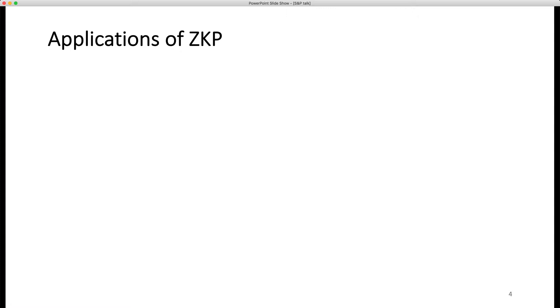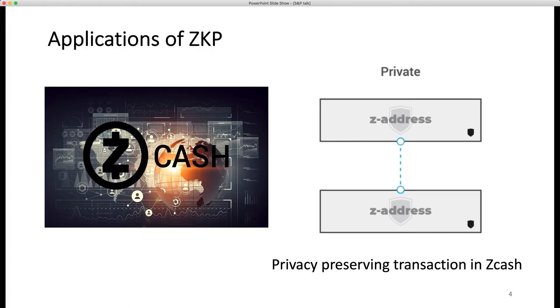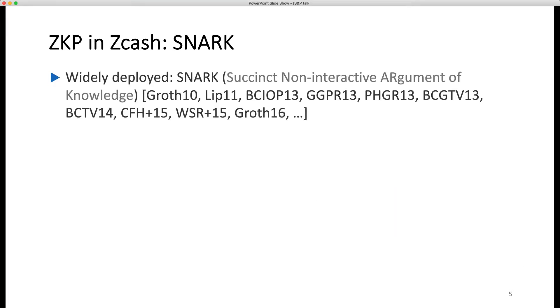There are several applications of zero-knowledge proofs in the real world, since it could help people to protect their privacy. For example, it can be deployed on blockchain to preserve privacy of transactions, and Zcash is a cryptocurrency with this technique. In Zcash, a transaction appears on the public blockchain — it is known to have occurred and the fee was paid — but the addresses and transaction amount are all encrypted and not publicly visible. Other nodes could still validate the transaction because of the properties of zero-knowledge proofs. The zero-knowledge proof protocol used in Zcash is called zkSNARK, which represents Succinct Non-interactive Argument of Knowledge.